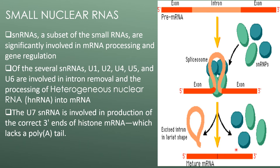The U7 snRNA is involved in the production of the three prime end of histone mRNA, which lacks a poly-A tail. snRNAs are involved in splicing — that is, the intron removal of the primary transcript to form a mature mRNA. The snRNAs form a complex with proteins to form ribonucleoprotein particles called snRNPs.